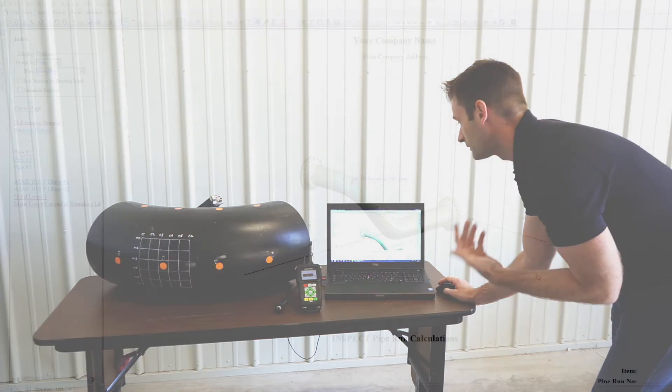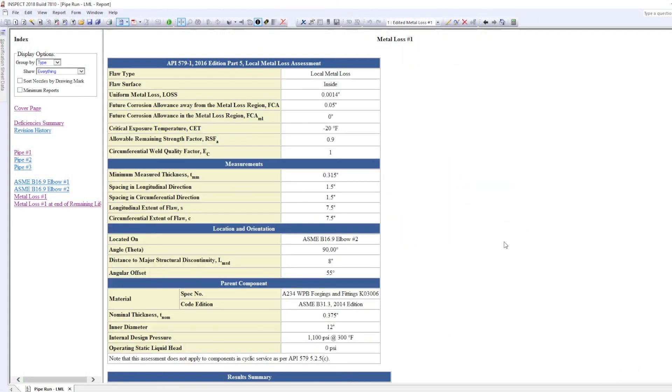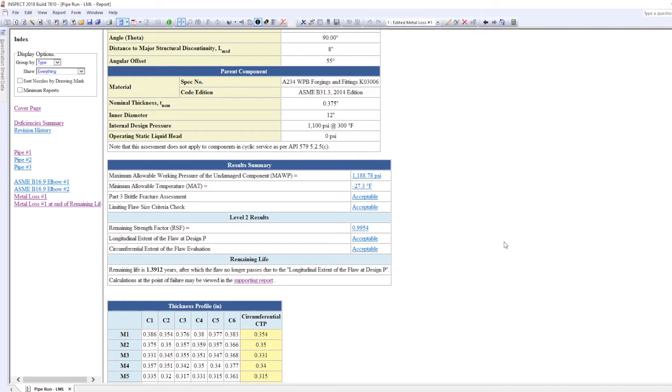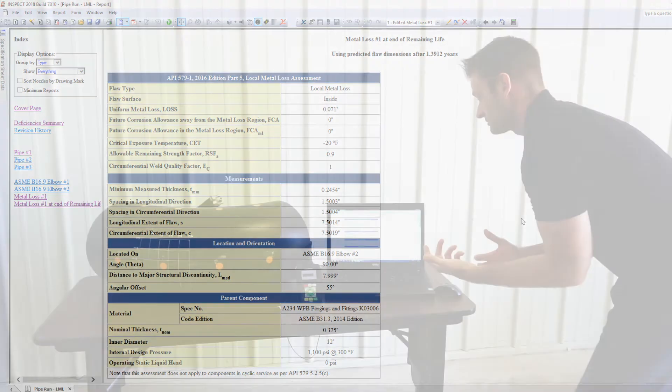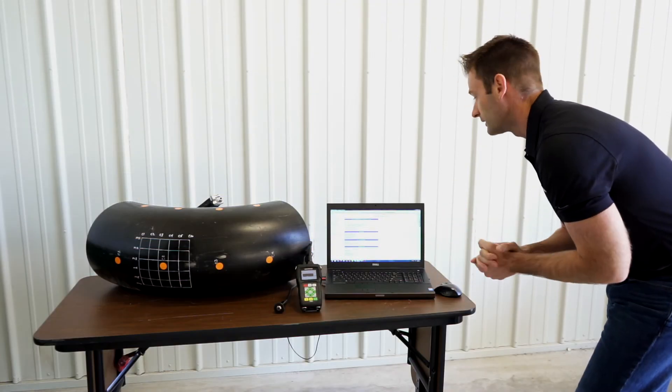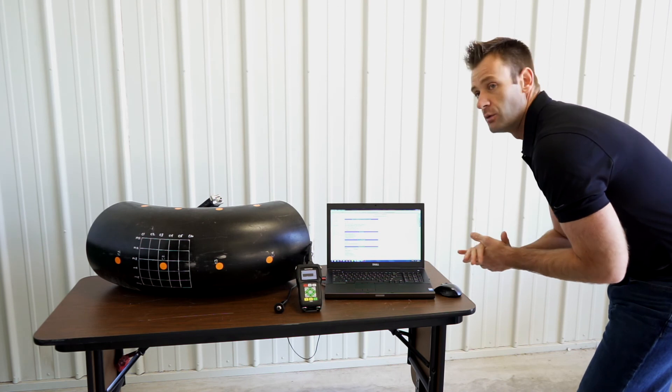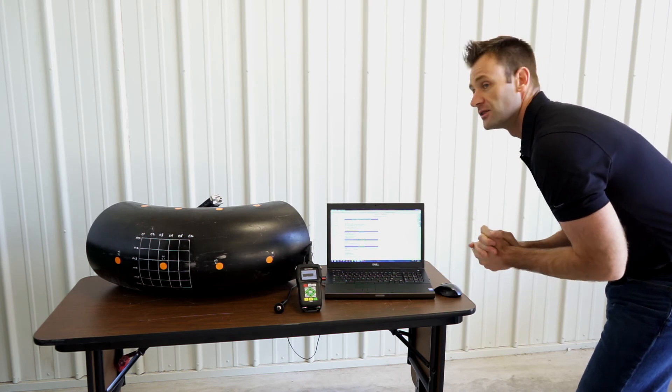So very quickly when I'm in the field I can click on the metal loss, come down here. As you can see from the results everything is acceptable. So it passes our fitness for service assessment. And again we've run levels 1 and 2. And we can also check out the remaining life that I had set up earlier. So as you can see using the predicted flaw dimensions we have 1.3 years remaining. So if your next scheduled shutdown is within the year we're fine. We can continue to run this. But we now know when we have to go back and either replace or repair it.